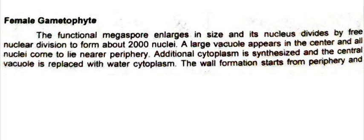From the reduction division of the megaspore mother cell, four haploid megaspores are formed. Three are disintegrated and only one functional megaspore survives. From this functional megaspore, the female gametophyte is produced by germination in the megaspore.